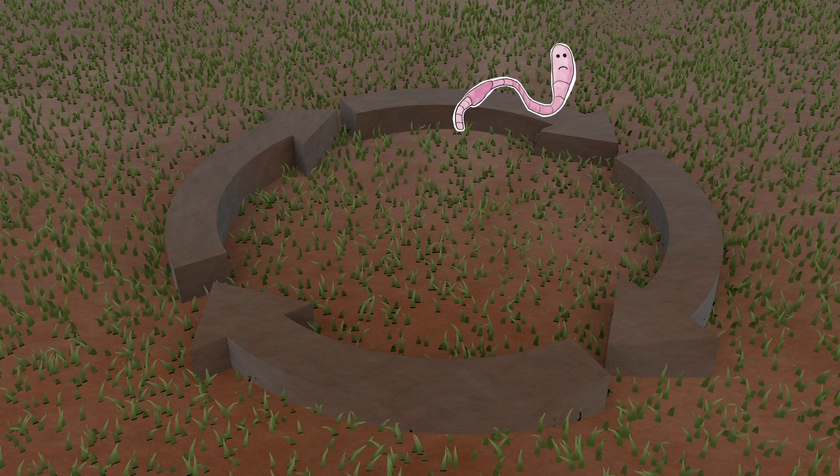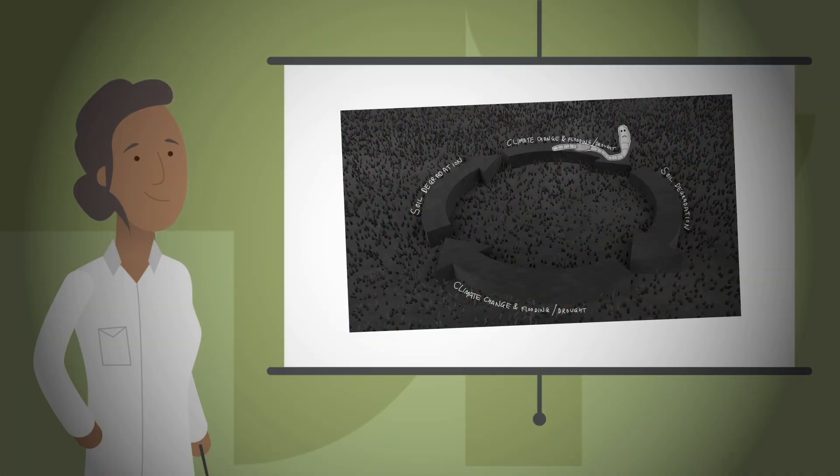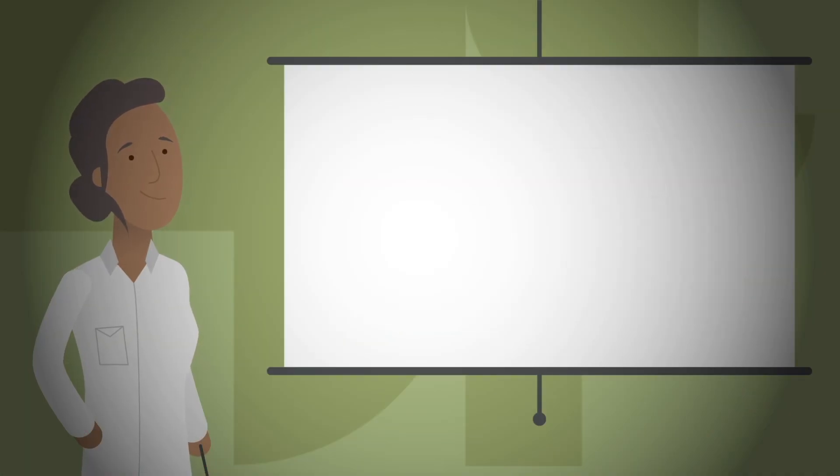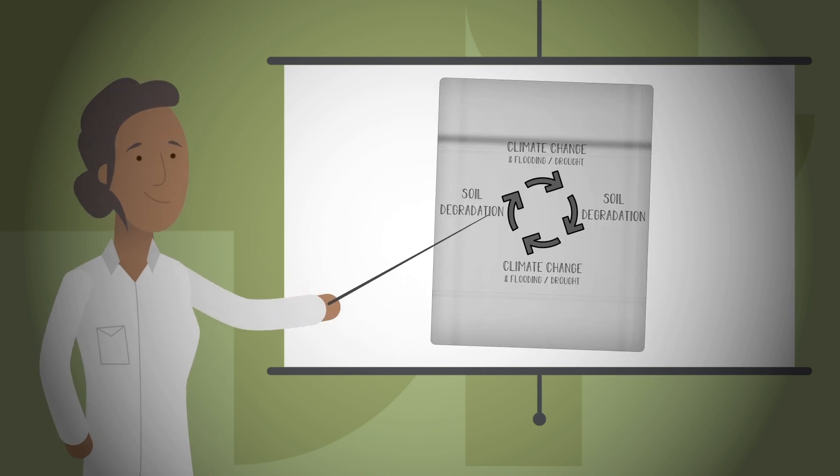Climate change itself, especially the floods and droughts it's causing, can be very damaging to the land. All of you know about climate change. You might also know that Sustainable Development Goal 13 is all about trying to slow it down.